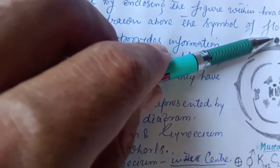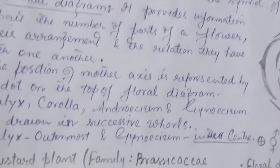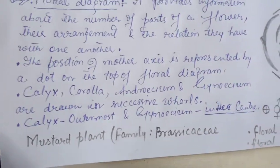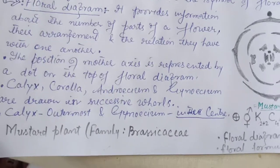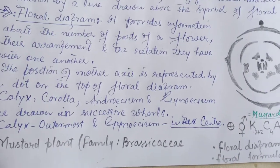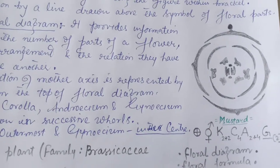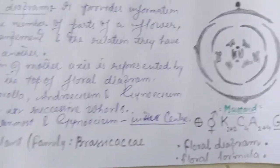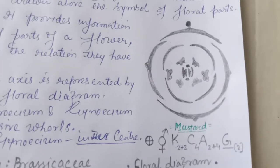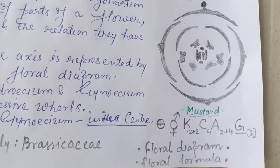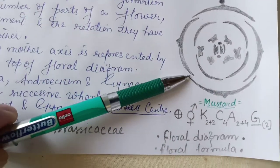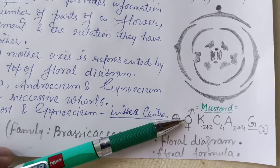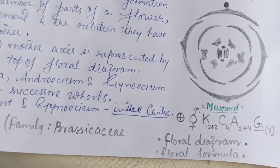Here is the position of the mother axis. Calyx, Corolla, Androecium, and Gynoecium are drawn in successive whorls. Calyx is the outermost and Gynoecium is in the center. The mustard flower diagram is shown here, along with its floral formula. It belongs to family Brassicaceae.